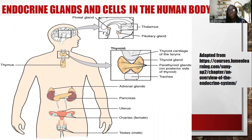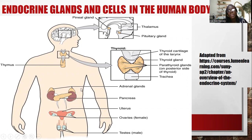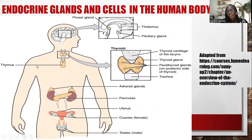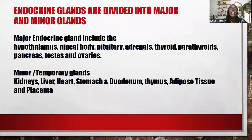Here is a picture of endocrine glands and cells in the body. We can see the hypothalamus, the pituitary just under it, the pineal gland at the back. The butterfly-shaped structure is the thyroid gland, with the parathyroid glands beneath it. We can see the adrenal glands just above the kidneys, the pancreas, the uterus and ovaries in females, the testes in males, and the thymus.